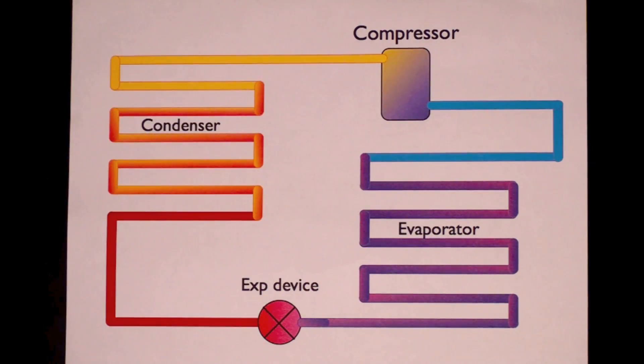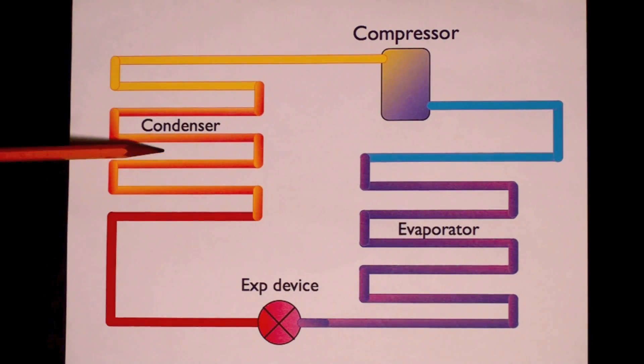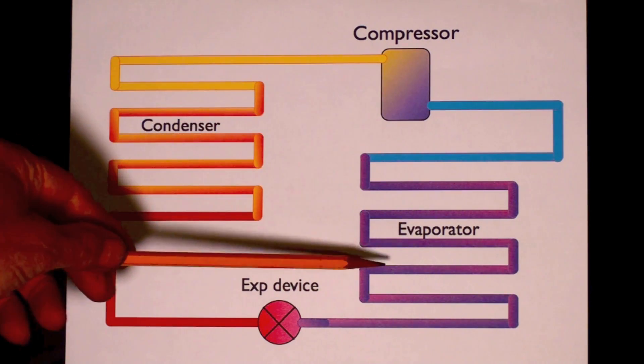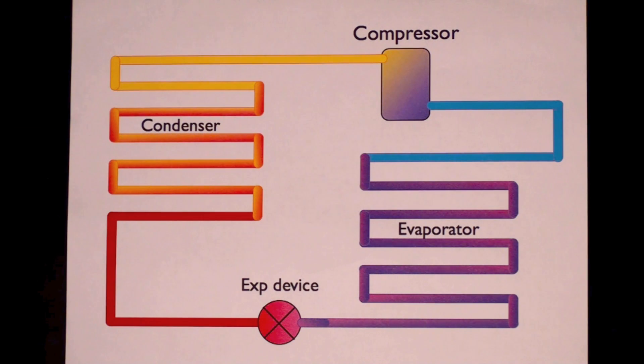Evaporator. Evaporator is the reason we do this. It absorbs the heat from whatever space or substance we're trying to take the heat from. The condenser takes the heat that was absorbed in the evaporator and releases it somewhere where it's not a problem.